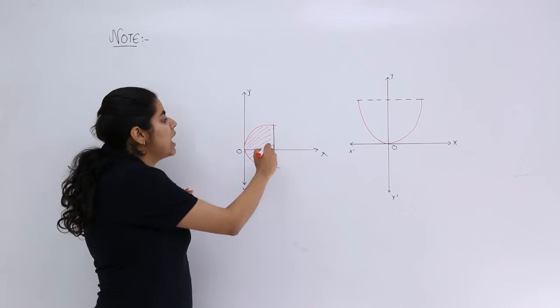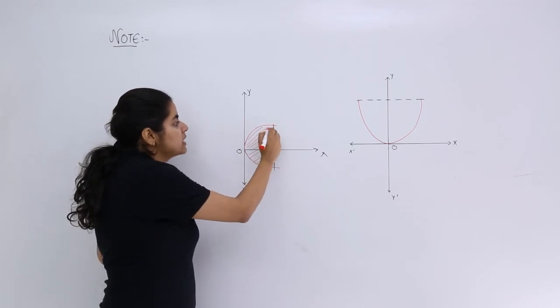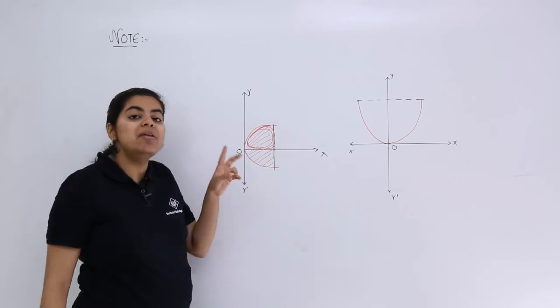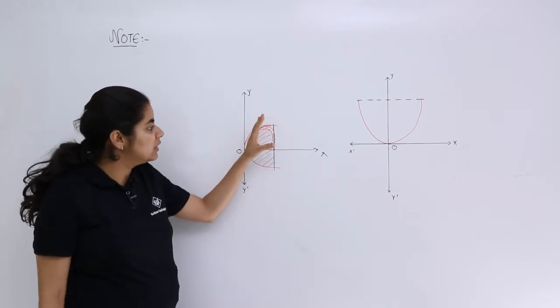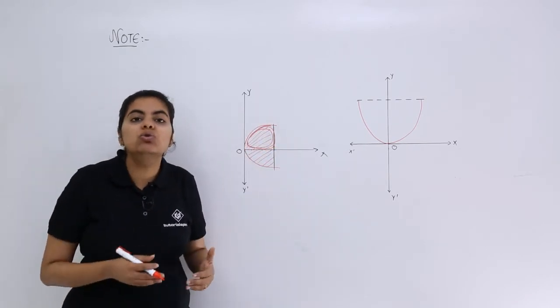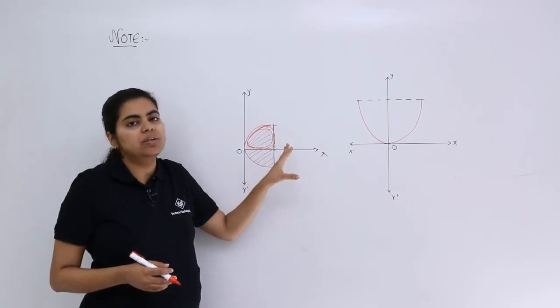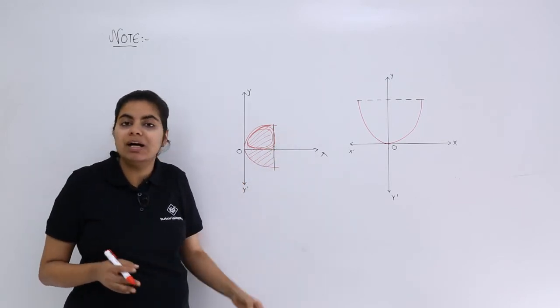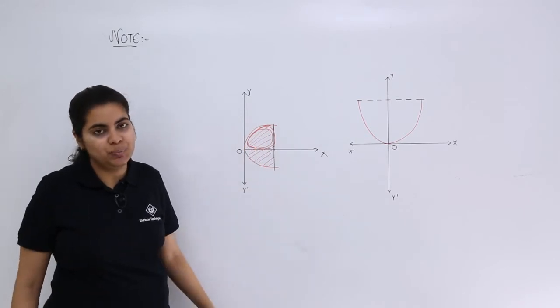So what I will do is I will find any one area. Say suppose I find only this area which is above the x-axis and multiply by 2, that will give me the complete area. So you don't have to find the area first of the top portion then of the bottom one. Directly find one and multiply by 2.